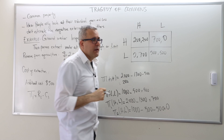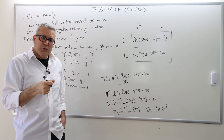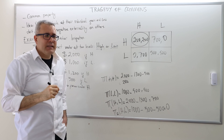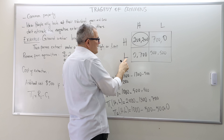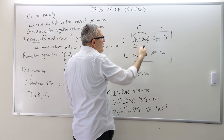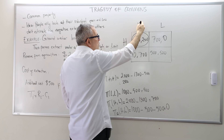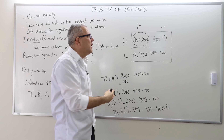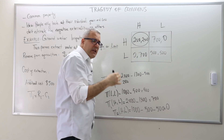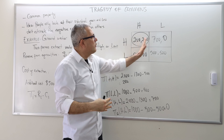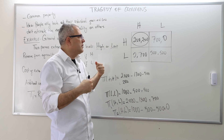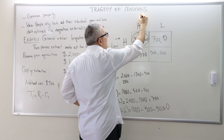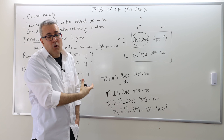Looking at this game, the Nash equilibrium — and in fact the dominant strategy equilibrium — is that both farmers choose high. Choosing high water is better than low whatever the other farmer does. If your opponent chooses high, you get 200 by choosing high versus 0 by choosing low. If your opponent chooses low, you get 700 by choosing high versus 500 by choosing low. So high is a dominant strategy for both, making (high, high) the dominant strategy equilibrium.